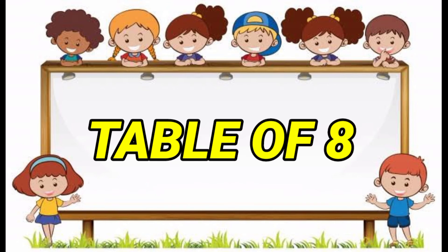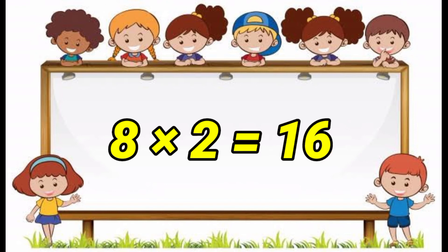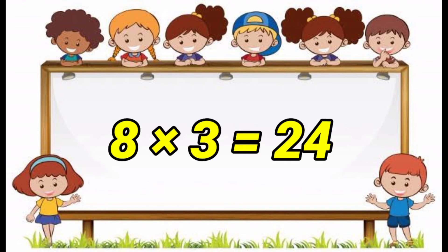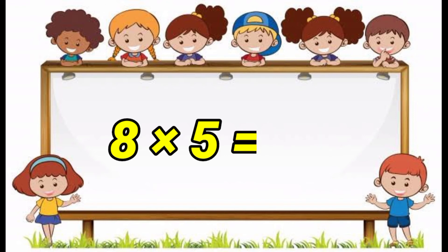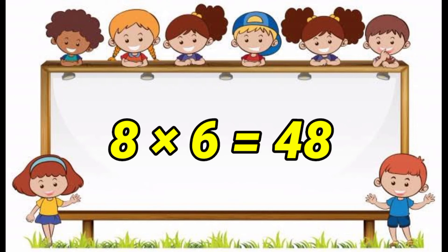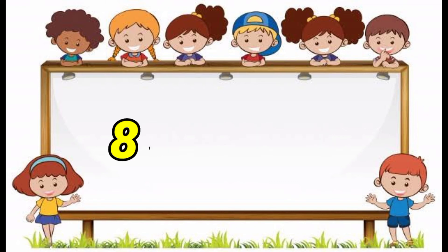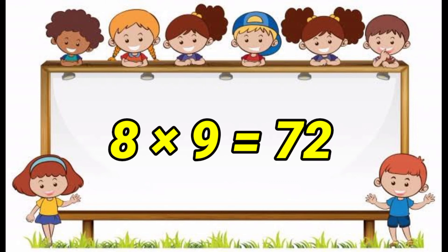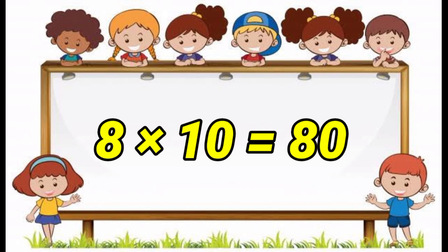Table of 8. 8 1's are 8. 8 2's are 16. 8 3's are 24. 8 4's are 32. 8 5's are 40. 8 6's are 48. 8 7's are 56. 8 8's are 64. 8 9's are 72. 8 10's are 80.